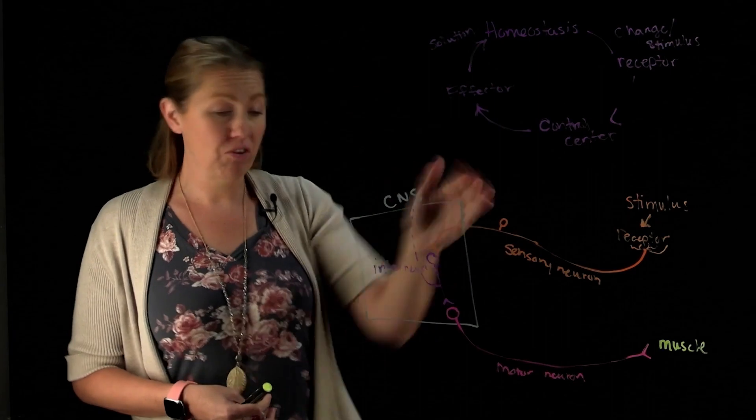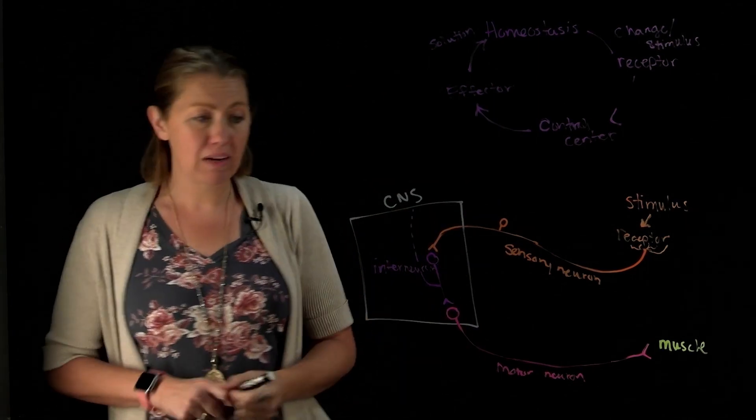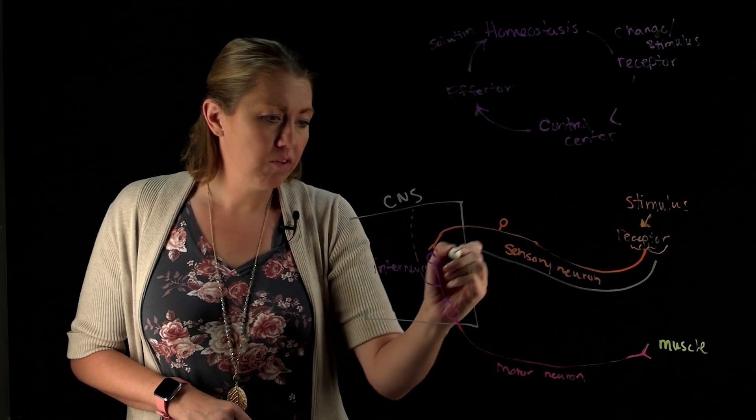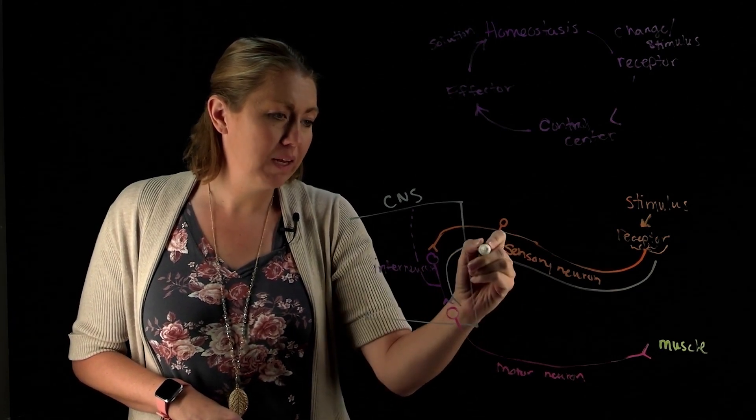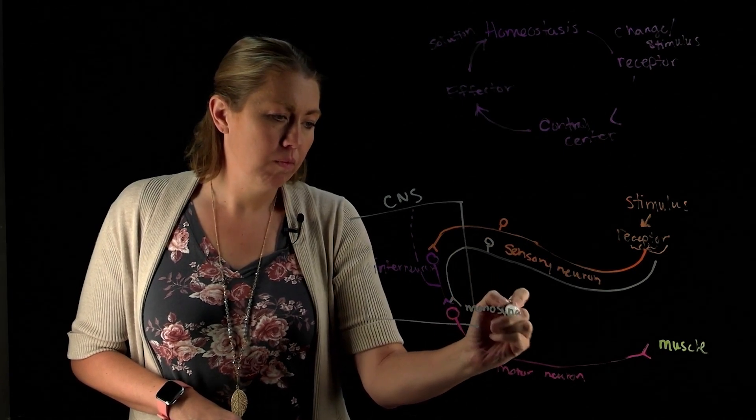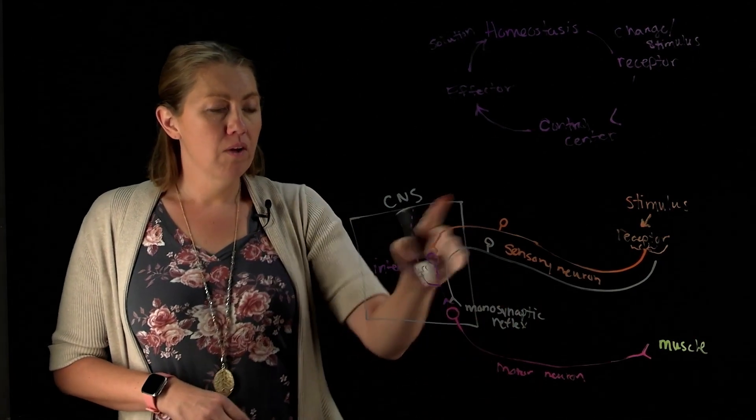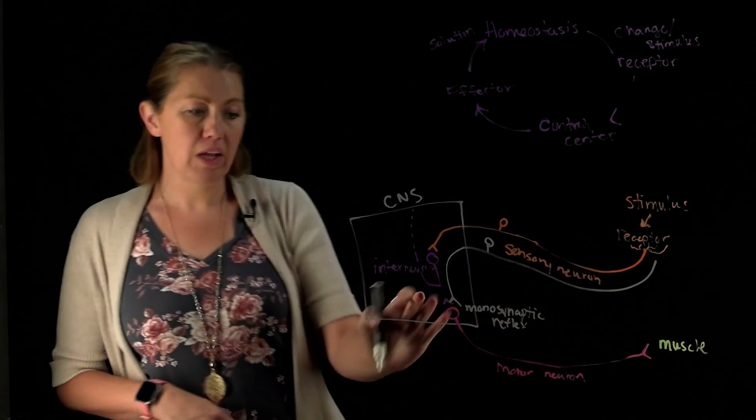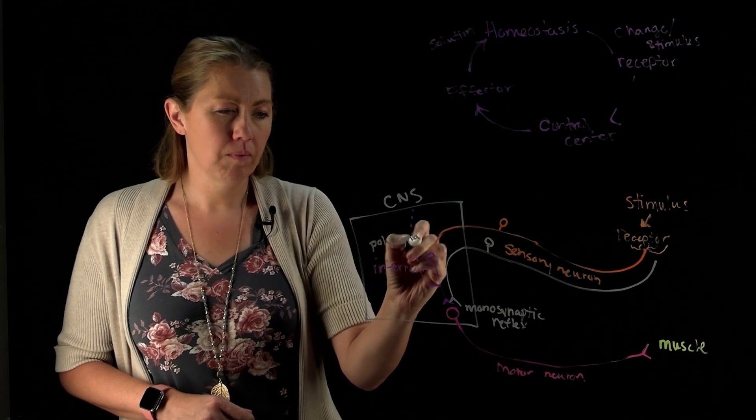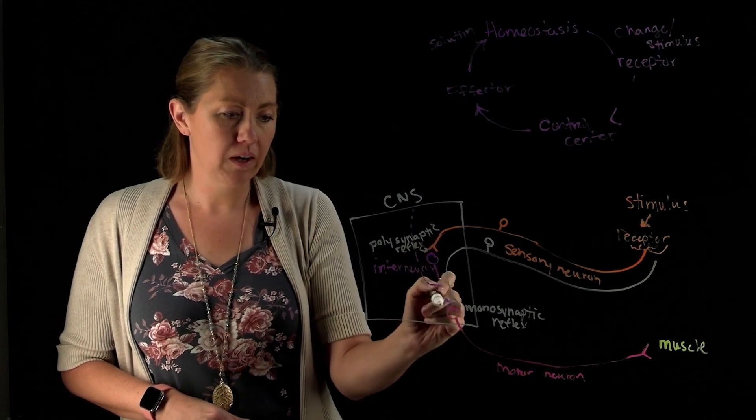But there are some times where you're just like, okay, I don't have to worry about also informing the brain, we're just going to handle it right away, we'll skip the middleman. And so there are some reflexes, stretch reflex being an example, where the sensory neuron will directly talk to the motor neuron. And that would be an example of what we call monosynaptic. So monosynaptic reflex, sensory neuron directly talking to motor neuron versus your typical reflex arc where you go sensory neuron, interneuron, motor neuron, this is going to be polysynaptic. So polysynaptic reflex for having multiple synapses, one there and one there.